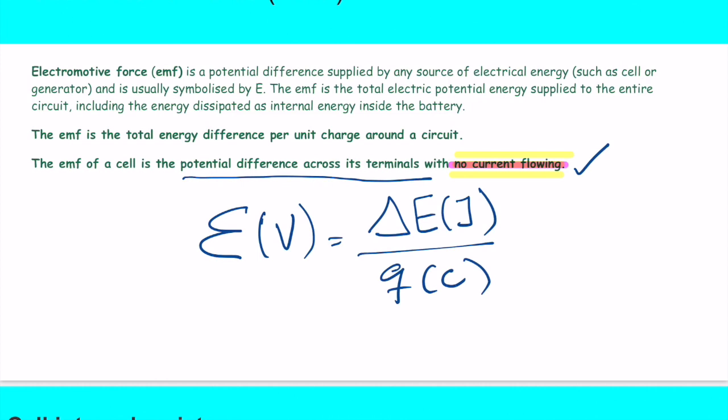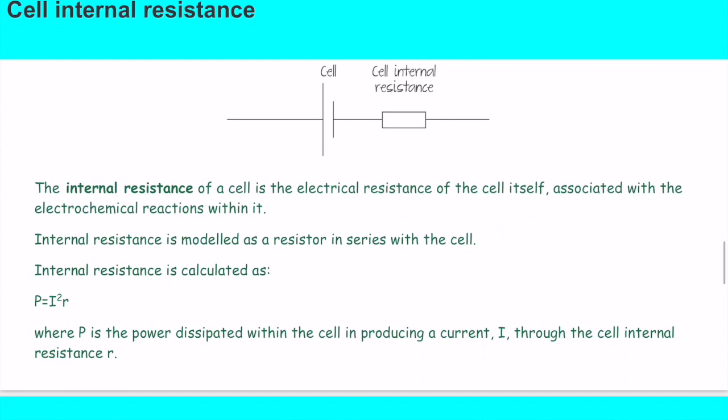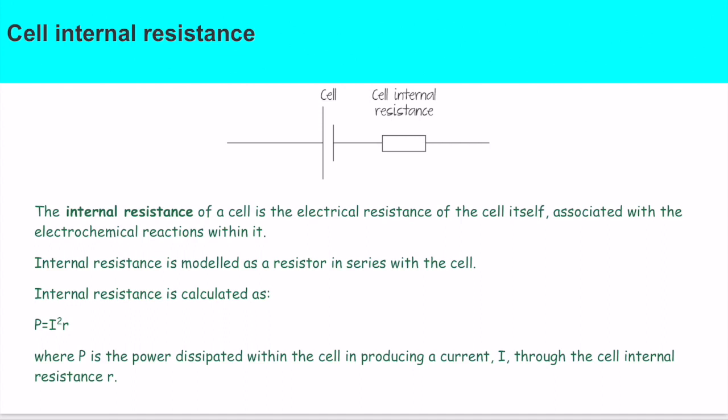When no current flows, the potential difference is maximum, and we call that electromotive force. What is internal resistance? We said that batteries have a characteristic curve, meaning the voltage drops. We saw in the graph last class how the potential difference drops over time depending on the current. The potential difference inevitably drops. Why? Because there is an internal resistance inside the battery that we cannot ignore.